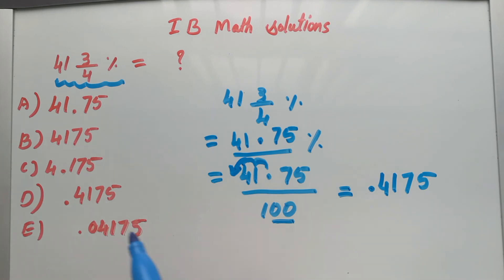So our option is D: 0.4175. See you in the next video. Bye-bye.